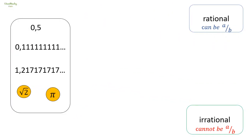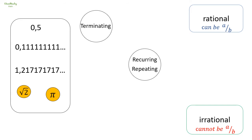In simple terms, a number can be written as a fraction if it satisfies one of these two conditions: first, it should be terminating, and second, if it is non-terminating, it should be recurring. So first we have to check if a number is terminating or non-terminating.